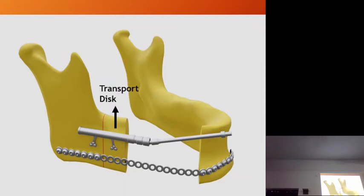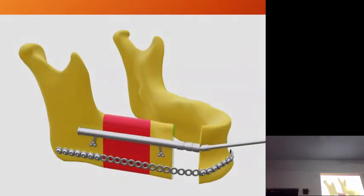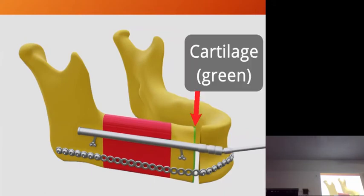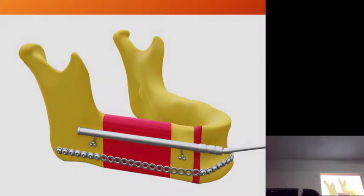There are two advantages of the reconstruction plate: it will cause immobilization of these two segments and it will act as a guide to the transport disc. We move it forward. The distal end of the transport disc gets covered by a cartilaginous structure. After distraction, we remove this cartilaginous structure and graft that side. Now we have two sides where new bone formation is there — this is bifocal.